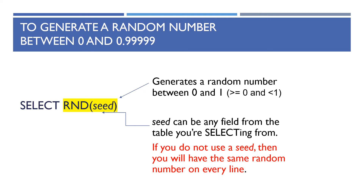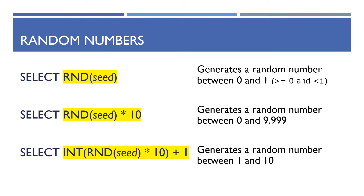RND(c) generates a number between 0 and 1. SELECT RND(c) * 10 gives a number between 0 and 9.999. Then SELECT INT(RND(c) * 10) + 1 — INT chops off the decimal part giving 0 to 9, and adding 1 gives you a whole number between 1 and 10. That's how you generate random numbers in different ranges.